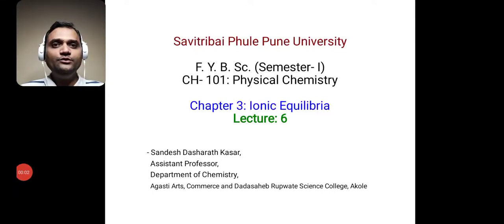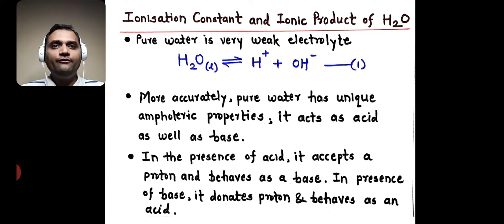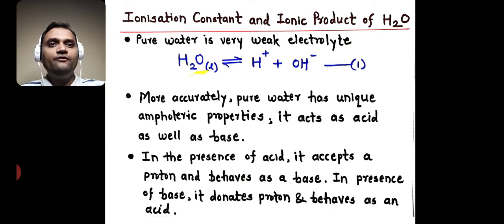Hi, welcome to lecture 6 of the chapter Ionic Equilibria. Today we are going to study ionization constant and ionic product of water. Now we know that pure water is a very weak electrolyte, therefore it undergoes partial ionization. When it undergoes ionization, it forms hydrogen ion and hydroxyl anion.